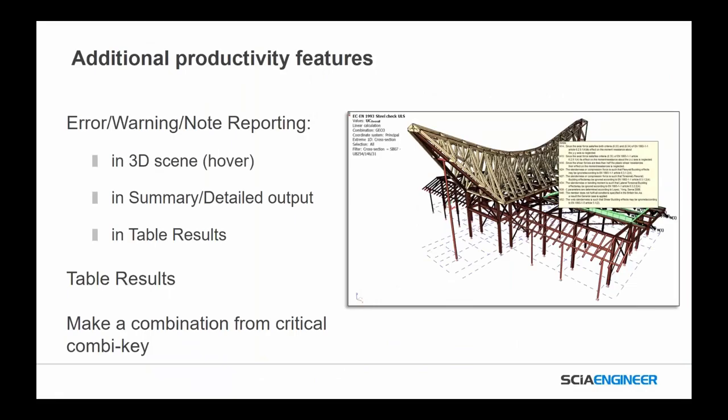Some additional productivity features: we now have error warnings and note reporting right in the 3D screen, so you can hover over a result and see a yellow text box showing notes — shear forces, axial force, code provisions. You can see these in the summary, detailed outputs, and table results. We also have better and more flexible table results. One of my favorite features is being able to see a combination from the critical combination key — if it was ULS 1 within an envelope, now you can see exactly what ULS 1 is: dead plus live or whatever the combination is, right there without having to explode it.